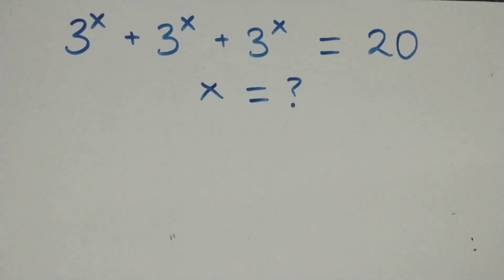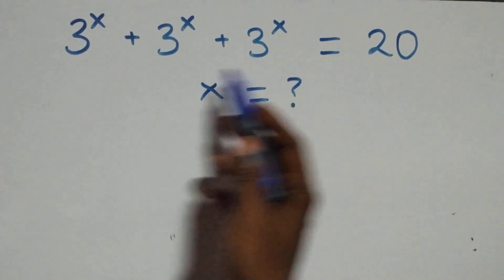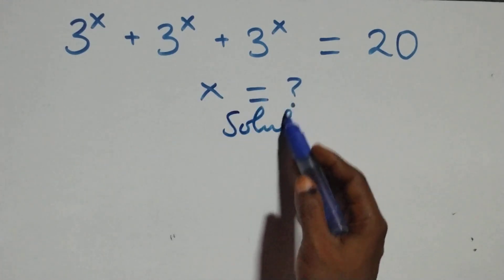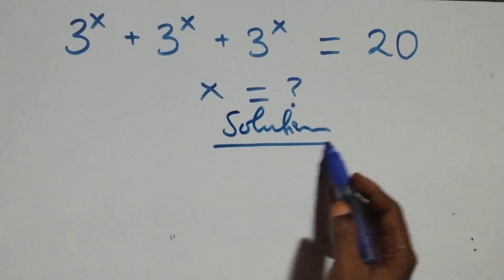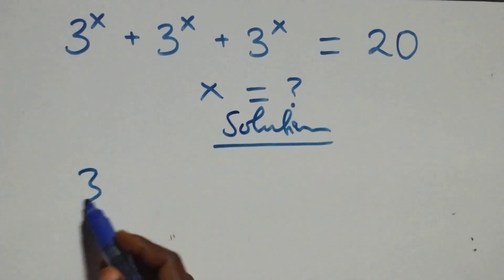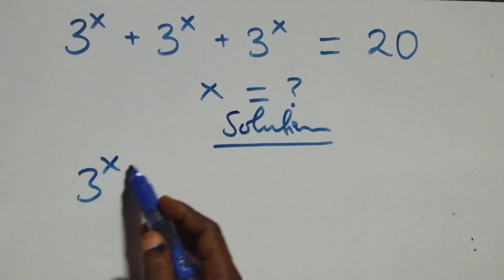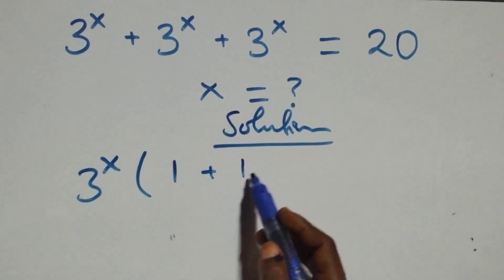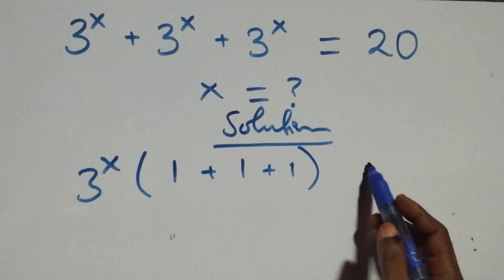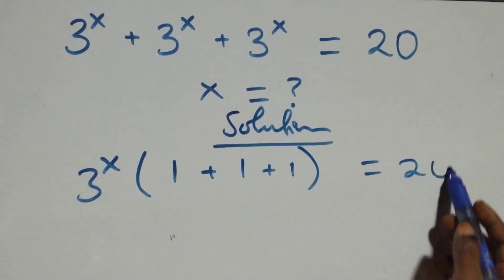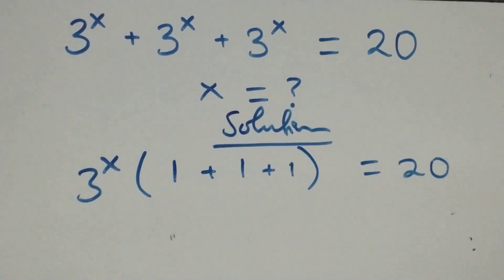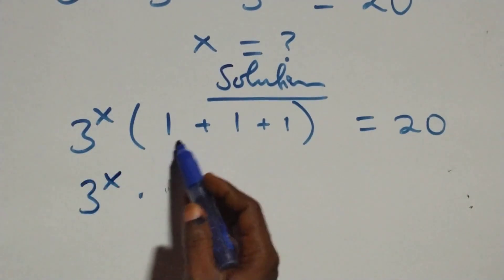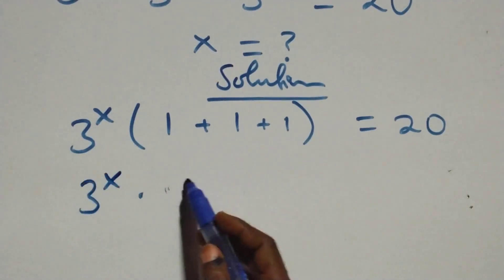Hello, you're welcome. How to solve this nice exponential equation. From what we have here, we factor 3 raised to power x out and we have 3 raised to power x into bracket 1 plus 1 plus 1 left here, equals to 20 on this side. That is, 3 raised to power x times 1 plus 1 plus 1, that's 3.